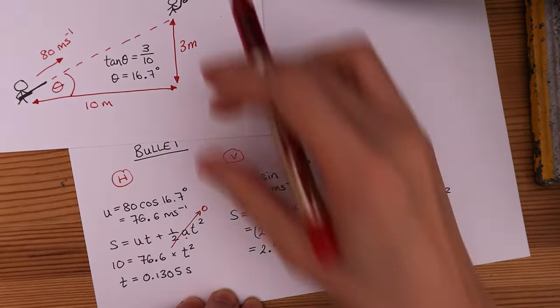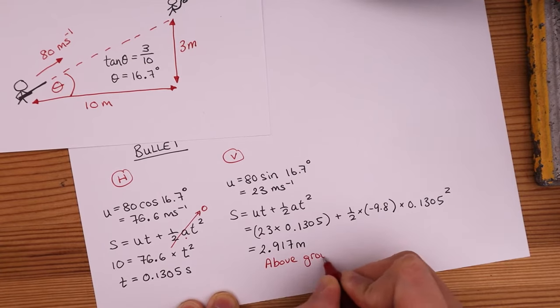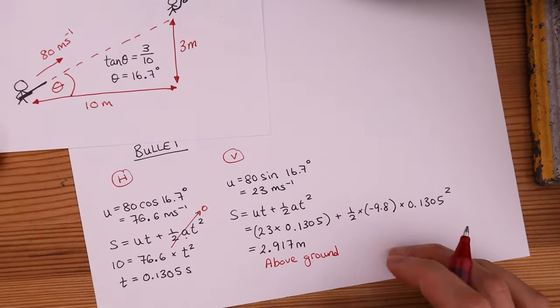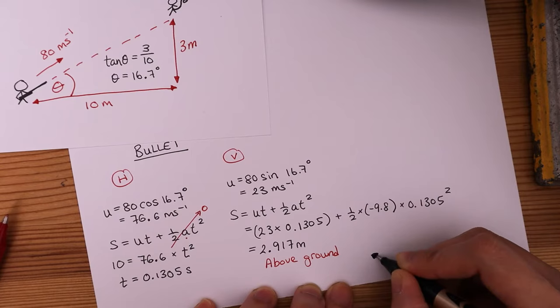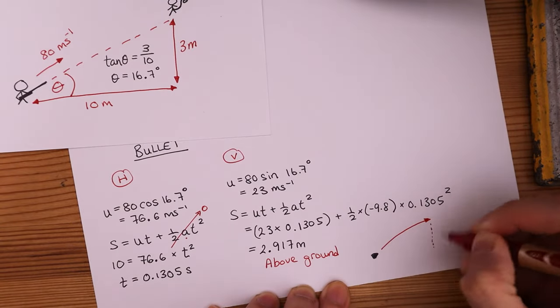So this is the height above ground. So after 0.1305 seconds, the bullet has traveled horizontally 10 meters, and at that time, it's going to be 2.917 meters above ground.